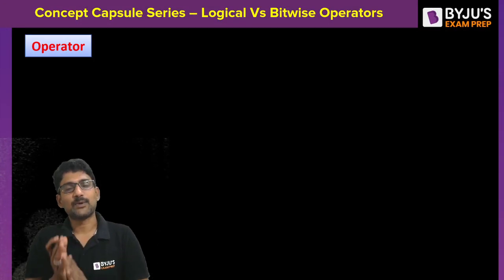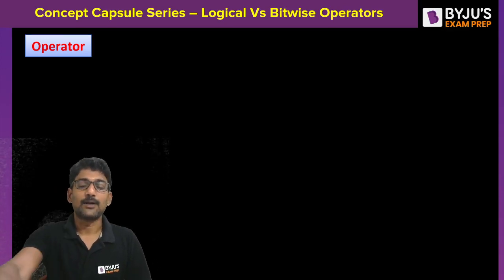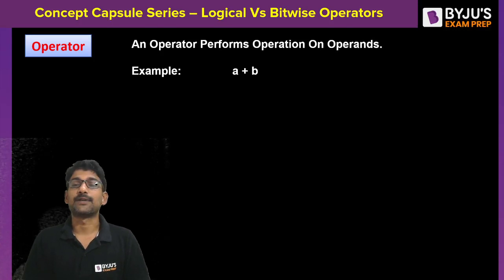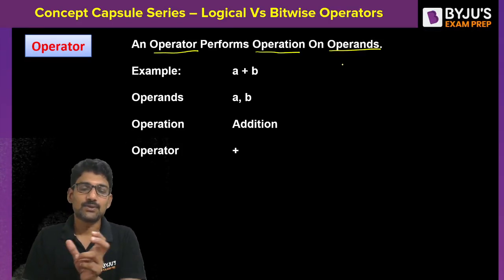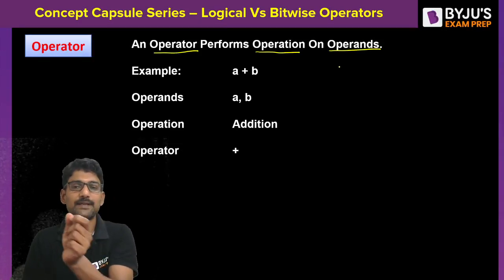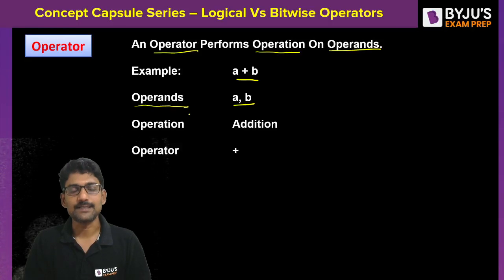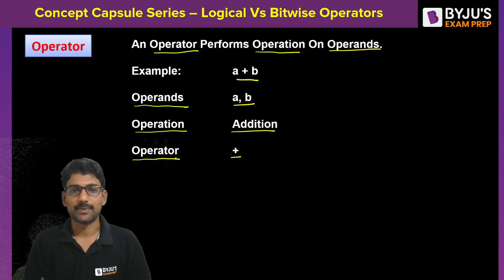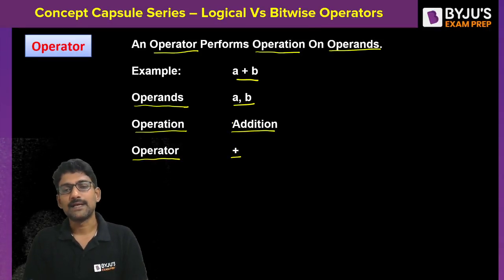What is an operator? An operator performs an operation on operands. For example, if you take a plus b — a and b are operands, addition is the operation, and plus is the operator. So the operator 'plus' performs the addition operation on operands a and b.